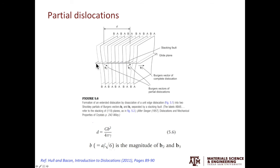Therefore, we have a balance of the repulsion force between the two partials and the attraction force due to the stacking fault energy. Thus, the dislocation core structure is stable when these two forces cancel each other.